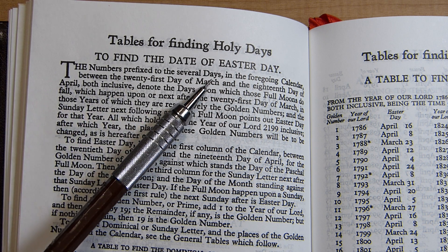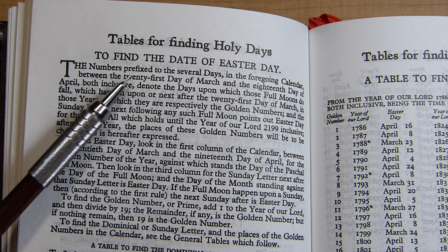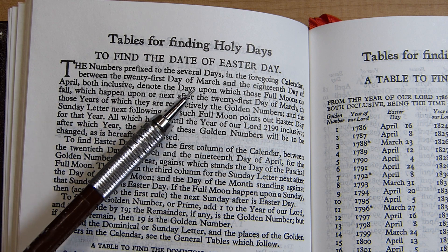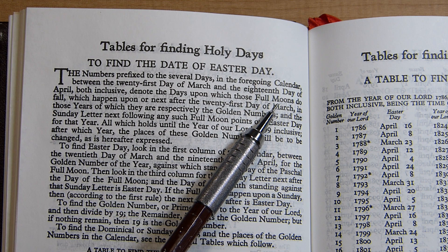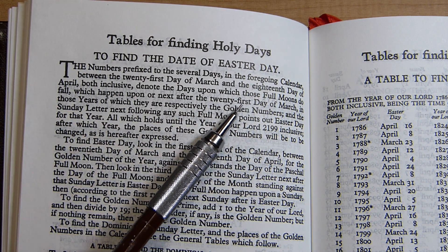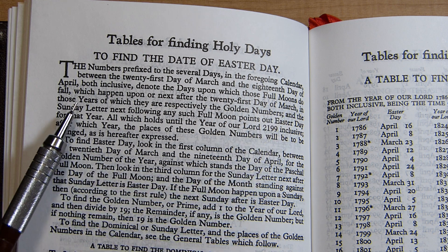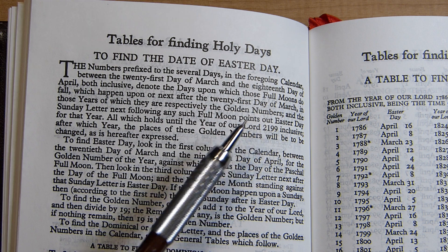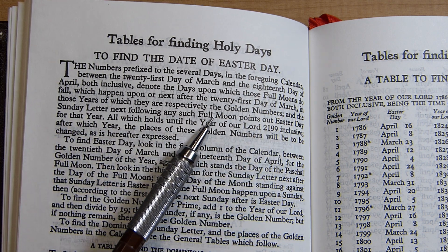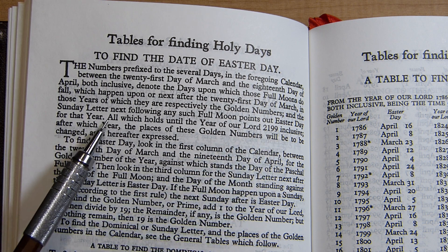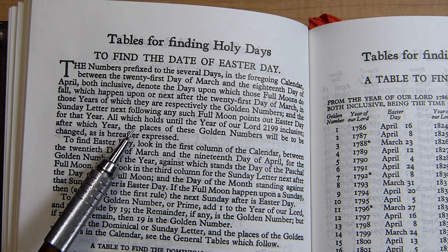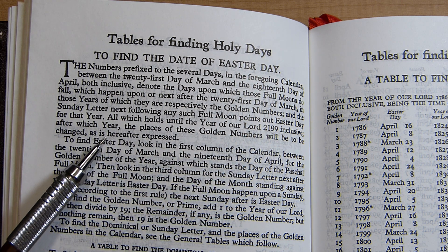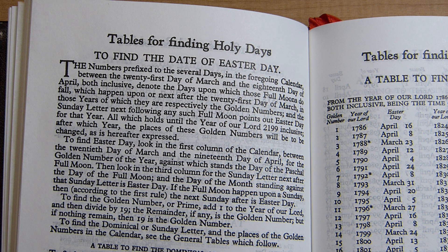The numbers prefixed to the several days — those are the golden numbers we looked at earlier in the foregoing calendar between the 21st of March and the 18th of April — inclusive denote the days upon which those full moons do fall, which happen upon or next after the 21st day of March, in those years of which they are respectively the golden numbers. And the Sunday letter next following any such full moon points out Easter day for that year. All this holds until 2199, after which year the places of these golden numbers will be changed. The reason for that is that the 19-year cycle of the full moons is only approximate, and these golden numbers will drift to different days on the calendar.